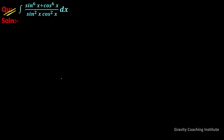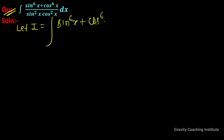The question is to integrate (sin⁶x + cos⁶x) / (sin²x · cos²x) dx. So first of all, let I equal to integration of (sin⁶x + cos⁶x) / (sin²x · cos²x) dx.